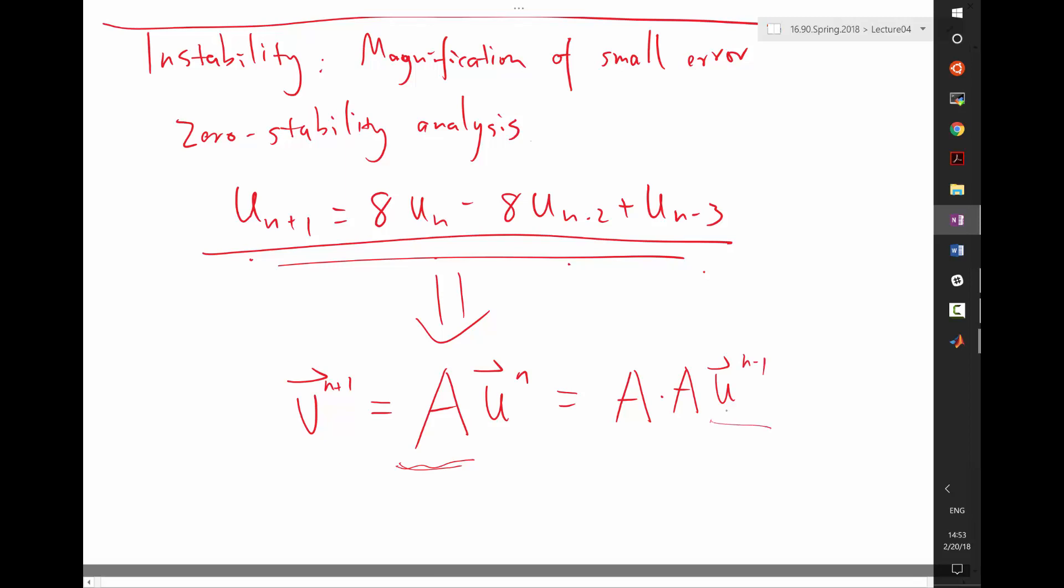Because then we know this is A times A times u of n minus one, right? And because I can apply the same relationship, that's equal to A times A times A times u_{n-2}, right? And if I do this again and again, actually, what I get is A to the n plus one times u of zero. So basically, I'm asking the question, how do you turn this recursive relationship to a matrix recursion? So that analyzing the stability of the scheme becomes analyzing the stability of a matrix to the certain power, which we can do using eigenvalues.